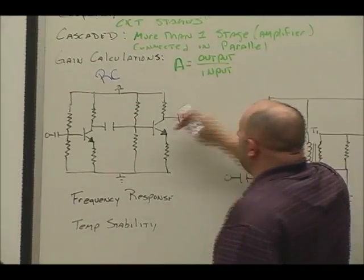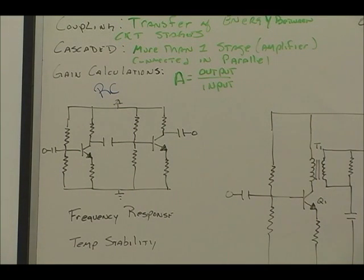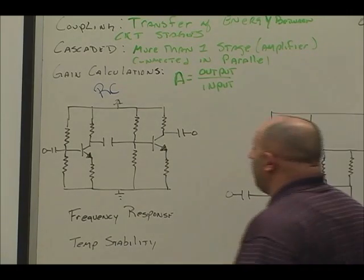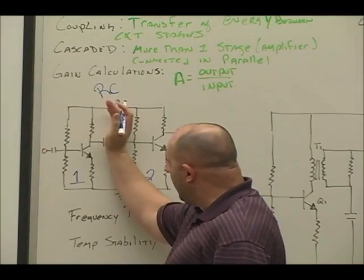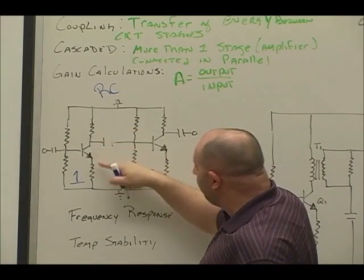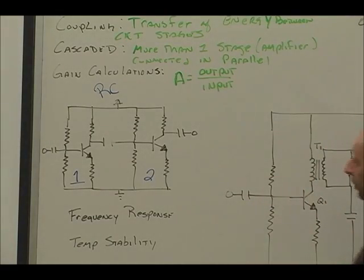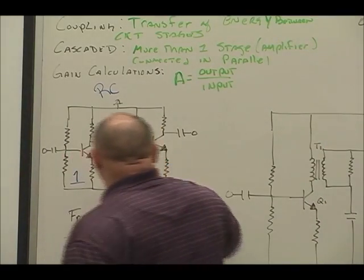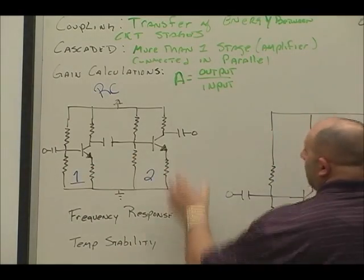Besides output over input, what's another way to calculate gain for a circuit? We can multiply the stages together. So if I identify this as stage one, and this one's stage two, voltage divider bias going off the base voltage out of collector and emitter resistor, and then this stage is basically the same. And in between the two stages, I have a capacitor coupling. So I can identify this as stage one, stage two.